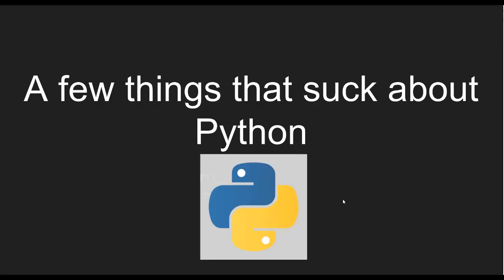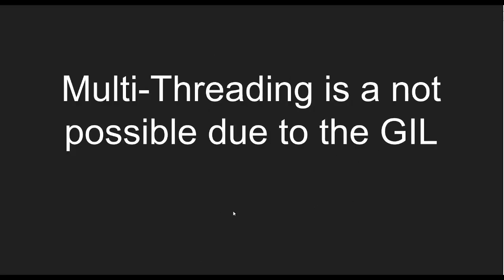Let's get into a few things about what sucks. Number one: multi-threading in Python is basically non-existent. That is mainly due to the GIL — the Global Interpreter Lock — which prevents multiple threads from being executed by Python at the same time. So Python can't do parallelism, or at least multi-thread parallelism — it's impossible.